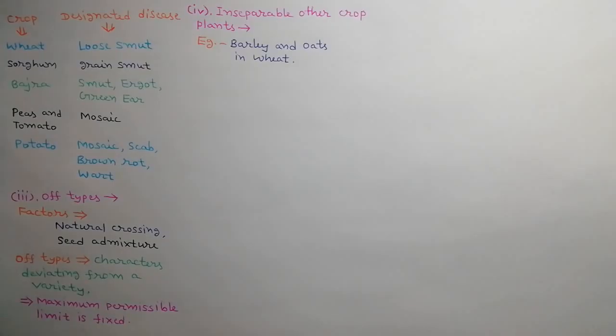Seeds of other crops mixed in some crops which are difficult to separate are called inseparable crop plants. For example, barley and oats in wheat.